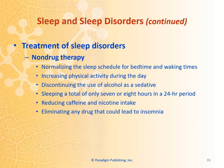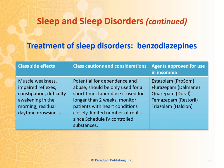Treatment of sleep disorders should probably start with non-drug therapy first, which includes normalizing the sleep schedule for bedtime and waking times, increasing physical activity during the day, discontinuing the use of alcohol as a sedative, sleeping a total of only seven to eight hours in a 24-hour period, reducing caffeine and nicotine intake, and eliminating any drug that could lead to insomnia. Benzodiazepines are also used to treat sleep disorders and can cause muscle weakness, impaired reflexes, constipation, difficulty awakening in the morning, and residual daytime drowsiness. Examples include Restoril, Halcion, Doral, Dalmane, and ProSom.